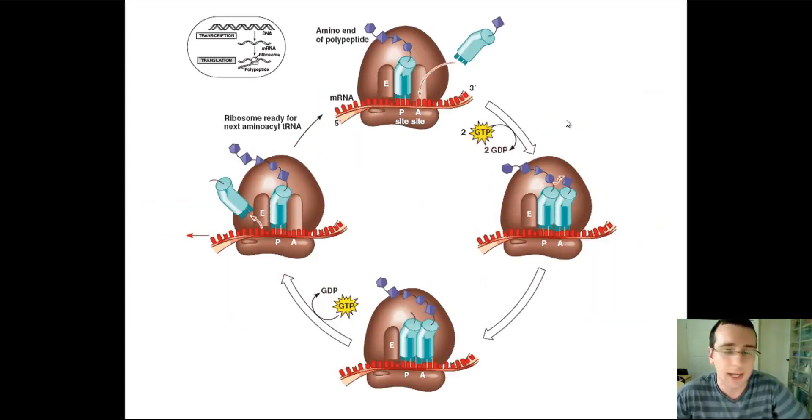Then, the next transfer RNA will be added to the A site by the same similar process. And elongation factors will facilitate the process of attaching that transfer RNA to the correct codon if it has the anticodon that it needs to have. And if it does, it will be carrying the next amino acid of the sequence, which will be right next to the amino acid that was already there before on the transfer RNA sitting on the P site.